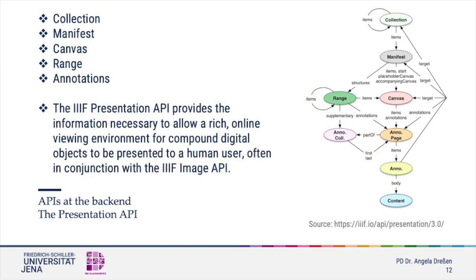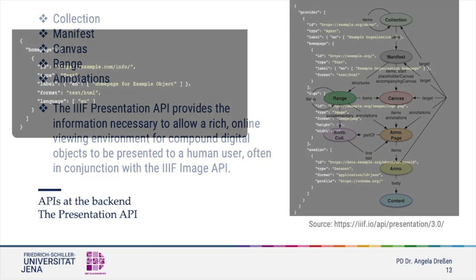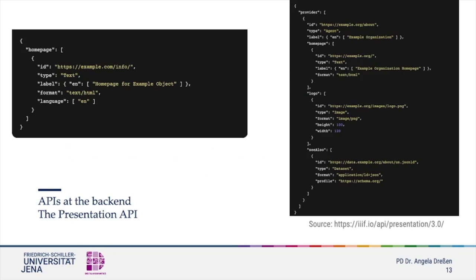The presentation API contains some information about the original depository of the image, its title and more metadata if necessary. Here you are looking at an example from the IIIF documentation showing the interaction of the various data. The presentation API is a useful feature to have. To look at it from the backend, we see a JSON file where this information is stored.